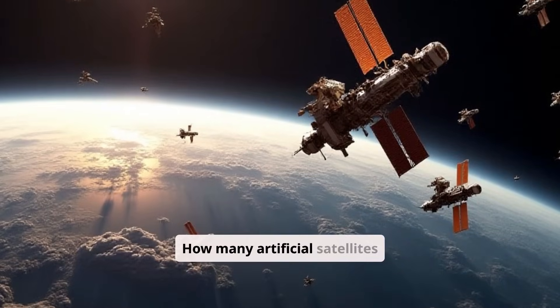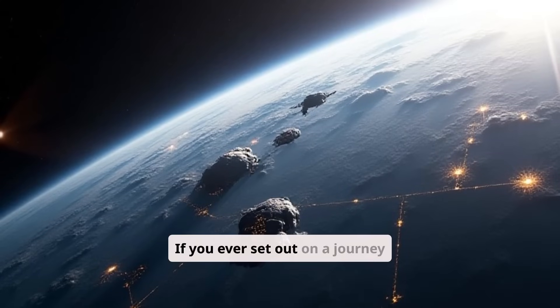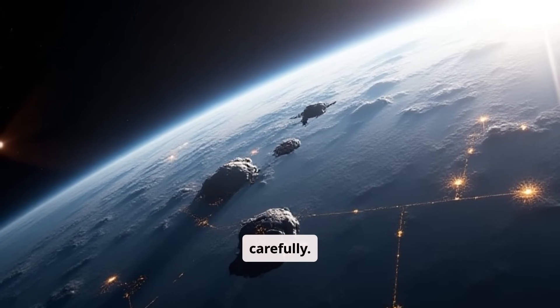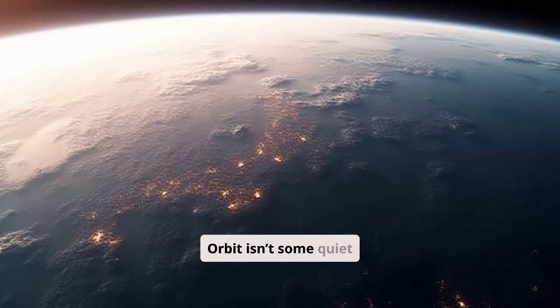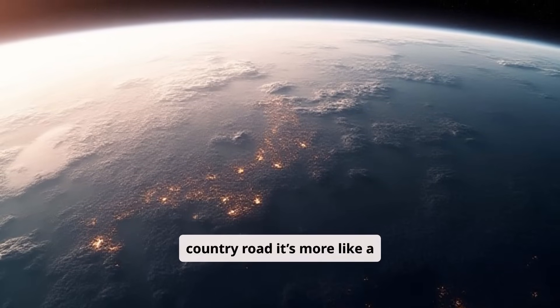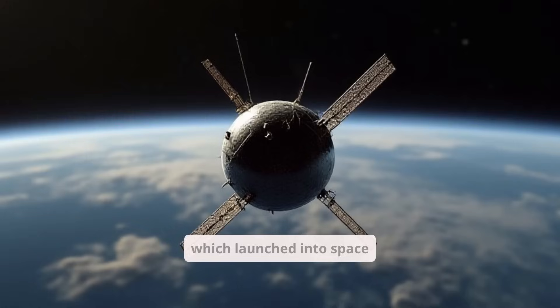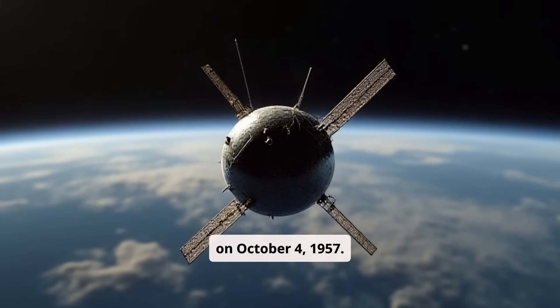How many artificial satellites orbit the Earth? If you ever set out on a journey around our planet, make sure to study the rules of space traffic carefully. Orbit isn't some quiet country road, it's more like a heavily trafficked highway. The first satellite is Sputnik, which launched into space on October 4, 1957.